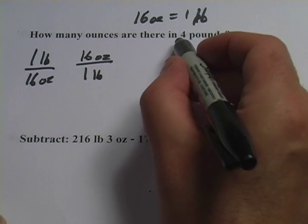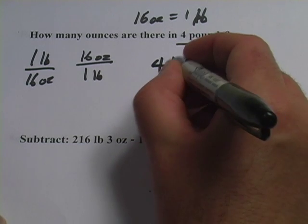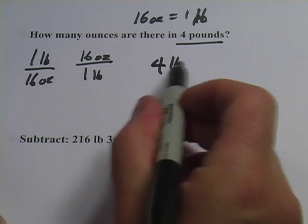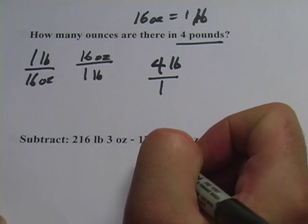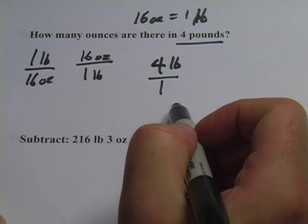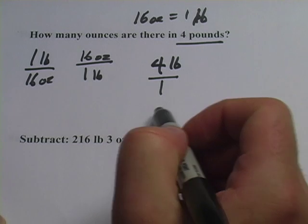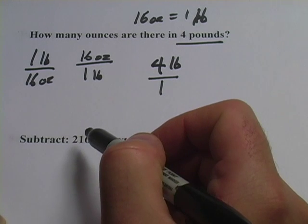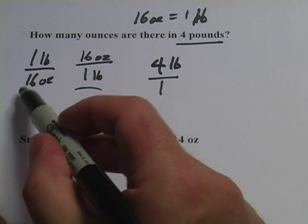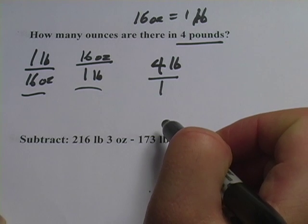So what we're starting with is 4 pounds. I'll put the units in there. And I like to write this as a fraction, so I just put a 1 on the bottom. That's the same thing as 4 pounds, but I've put it in the form of a fraction because I'm going to multiply it by another fraction.